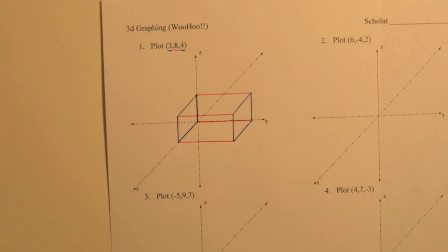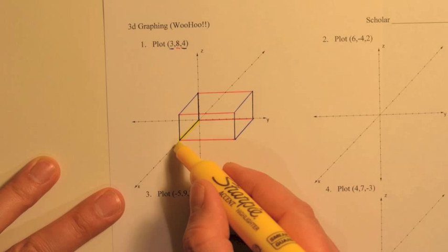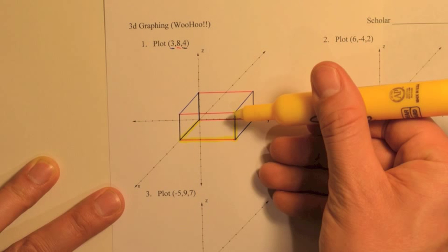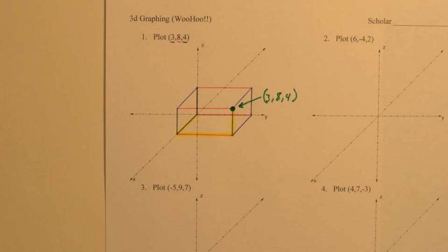Now, one of the vertices, one of the corners of this box, is the point (3, 8, 4). And so, we'll move in order. Start with the x, we'll move 3 units forward, we'll move 8 units to the right, and we'll move 4 units up. And so, that corner is the point (3, 8, 4).